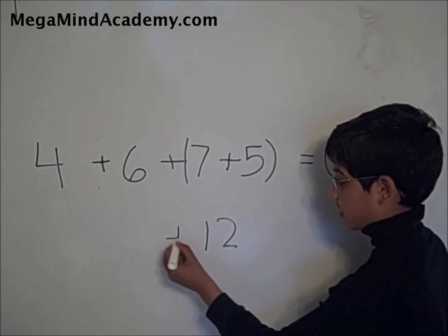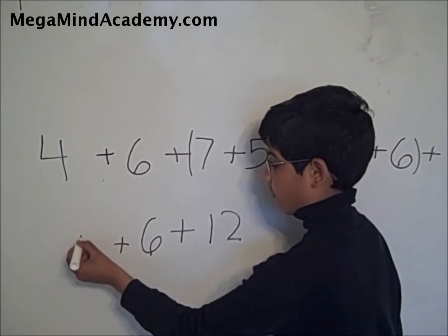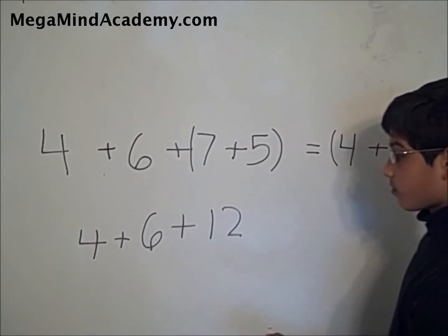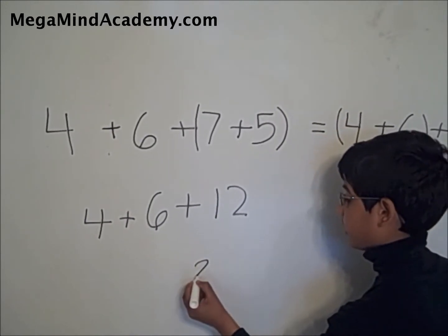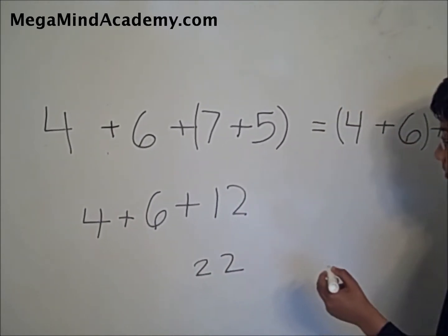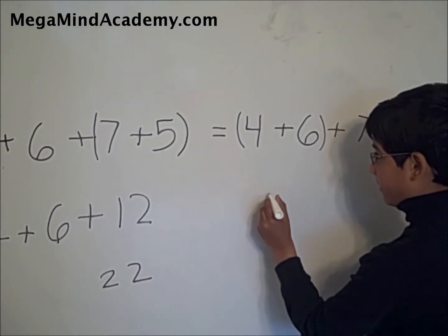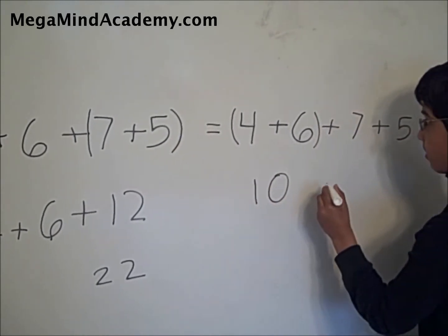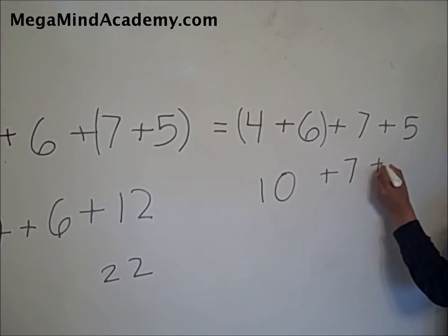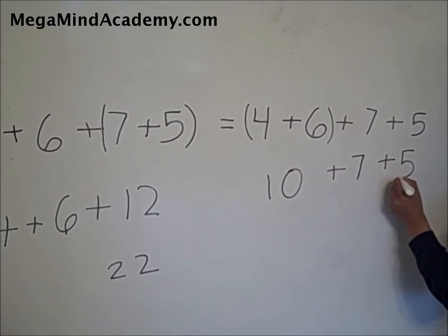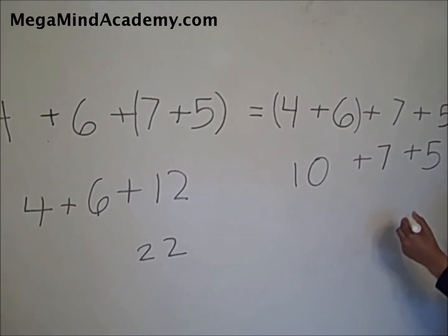Plus six plus four. Four plus six equals ten. Plus twelve equals twenty-two. Four plus six equals ten. Ten plus seven plus five. Seven plus five equals twelve. Plus ten equals twenty-two.